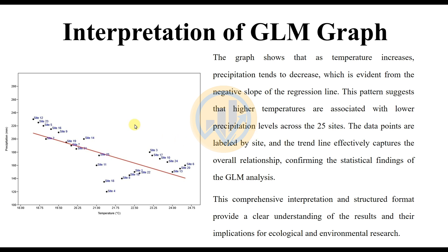Now for the interpretation of the Generalized Linear Model graph. The graph shows that as temperature increases, precipitation tends to decrease, which is evident from the negative slope of the regression line. This pattern suggests that higher temperatures are associated with lower precipitation levels across the 25 sites. The data points are labeled by site, and the trend line effectively captures the overall relationship.